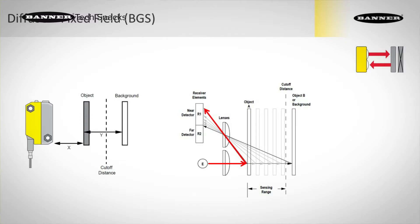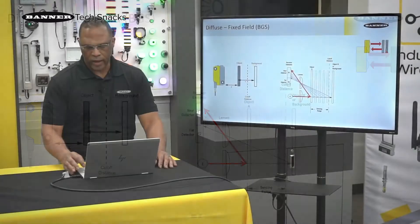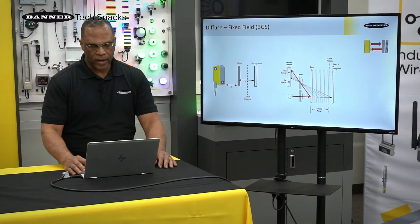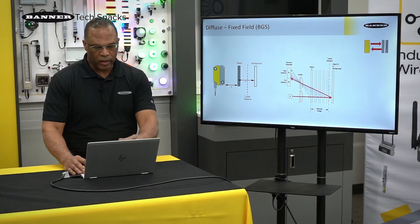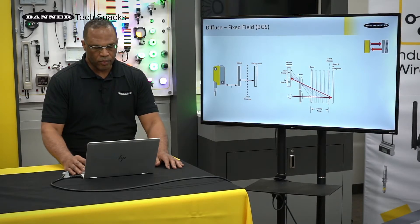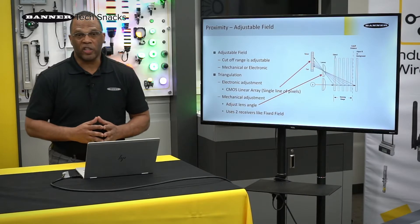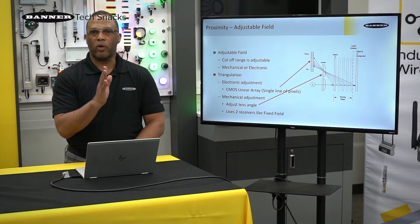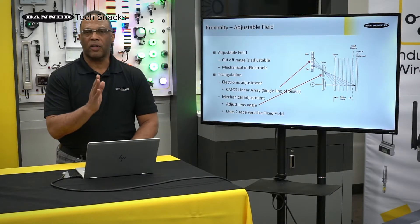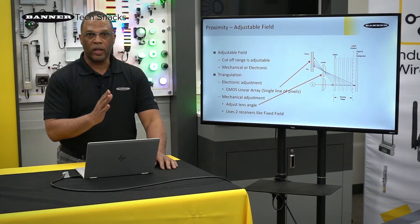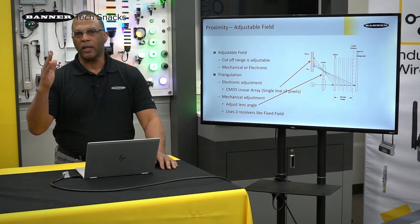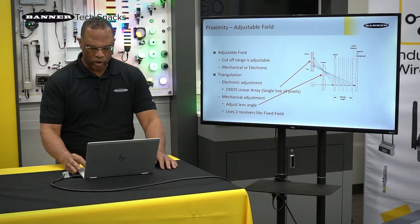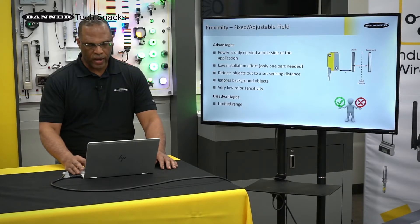You can have a shiny bracket behind a target and a fixed field sensor will ignore that — it's a huge advantage. We also have adjustable field, where the range is no longer fixed. It's adjustable, so you can dial it in to the range that you need and continue to get background suppression. Another great advantage.